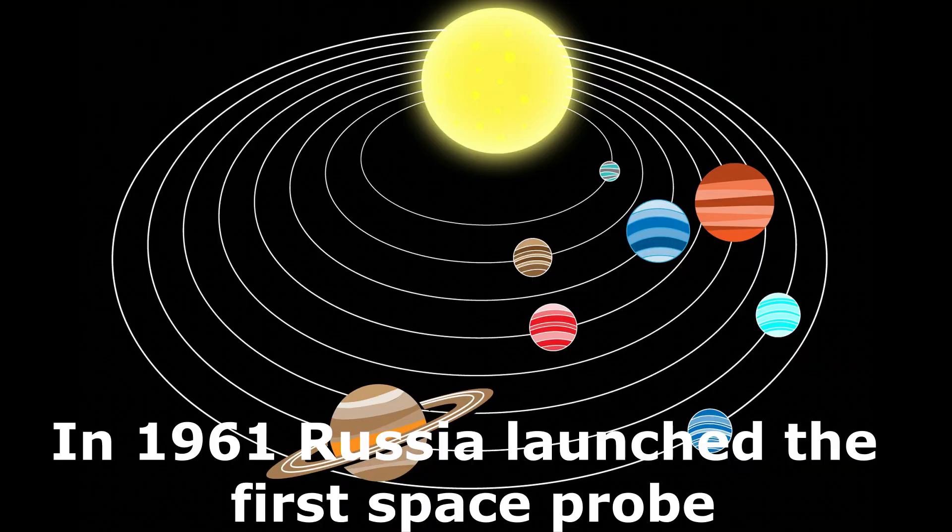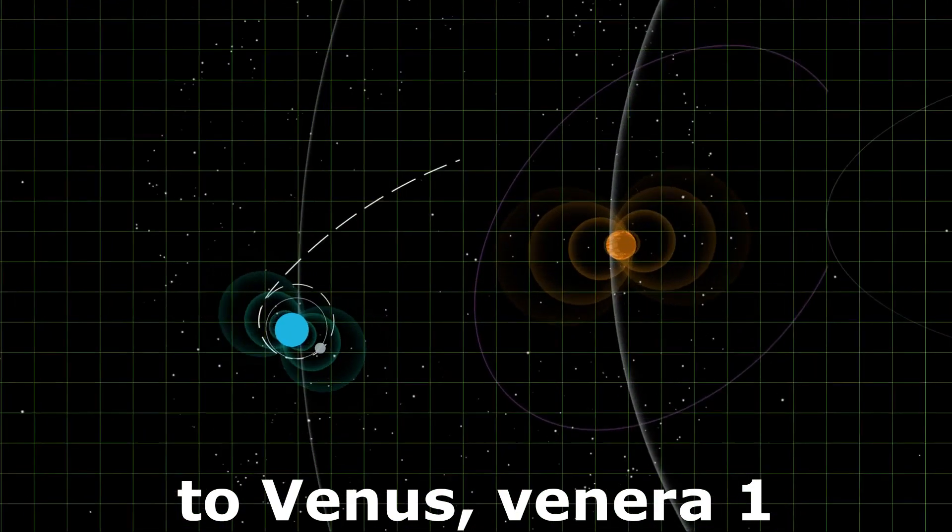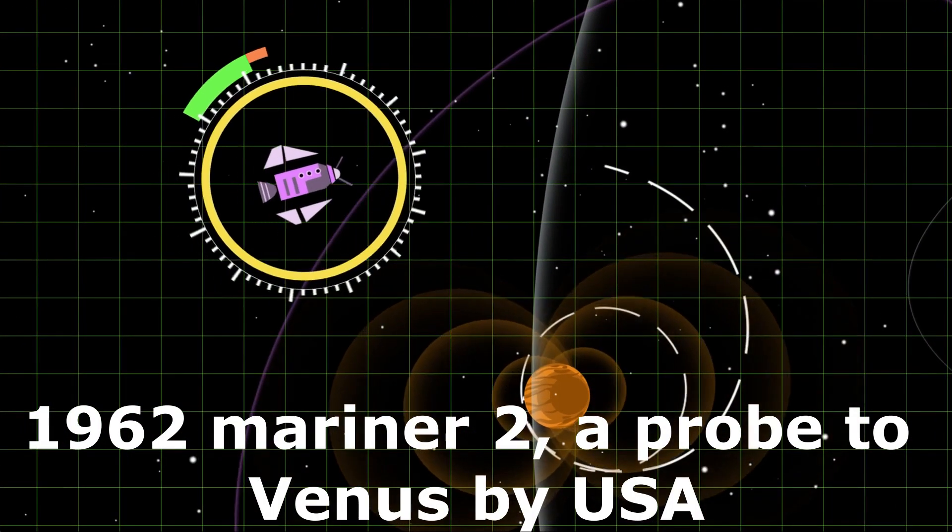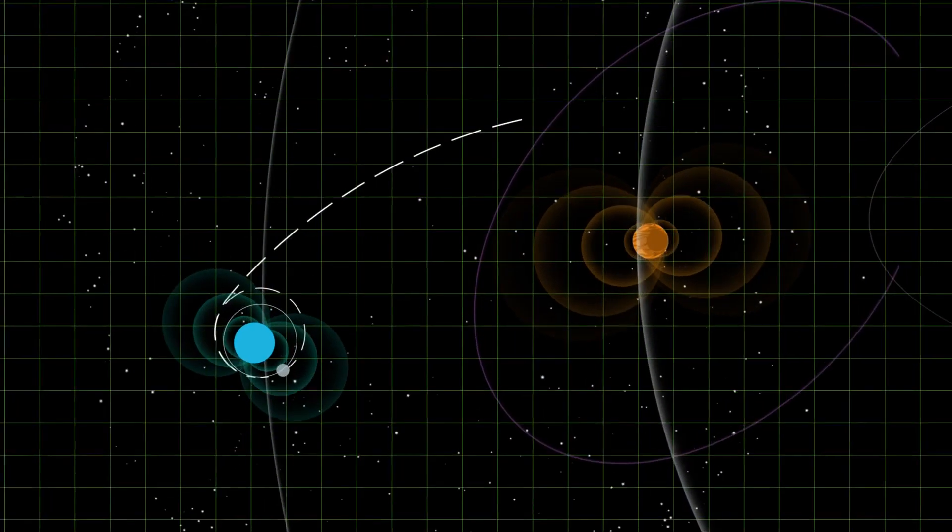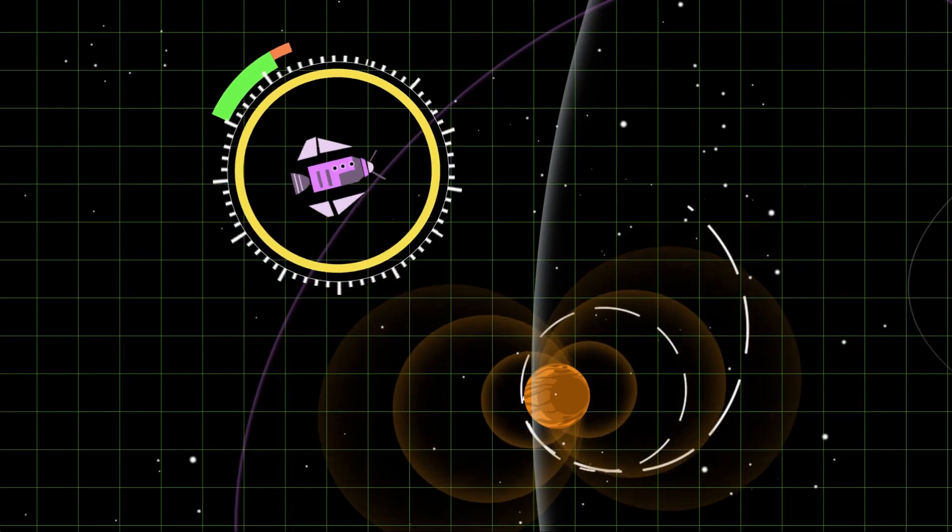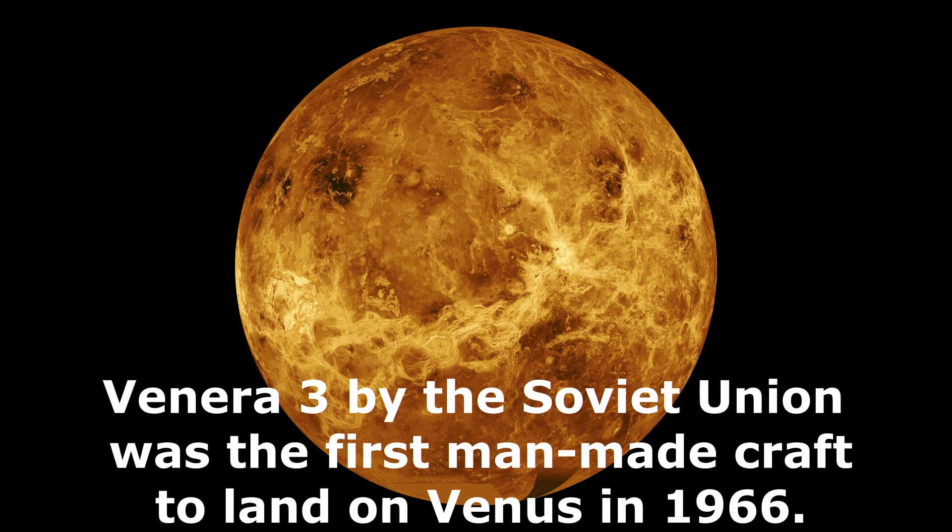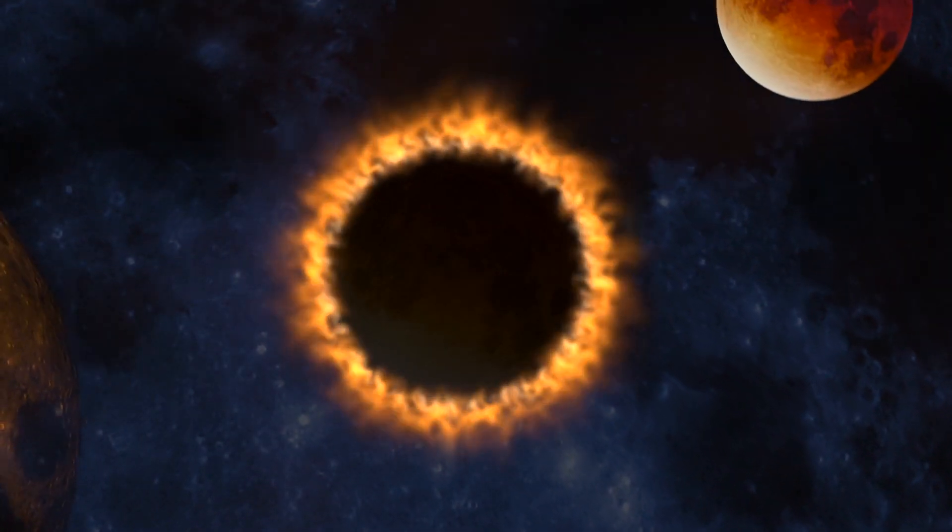In 1961, Russia launched the first space probe to Venus, Venera 1, but it lost contact with base. But in 1962, Mariner 2, a probe to Venus by USA, was able to take measurements of the Venus planet. It is important to note here that Venera 3, by the Soviet Union, was the first man-made craft to land on Venus in 1966.